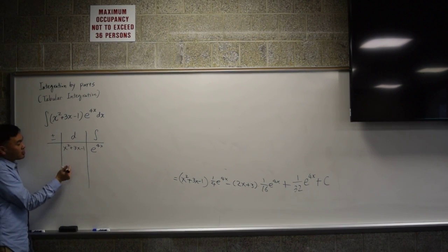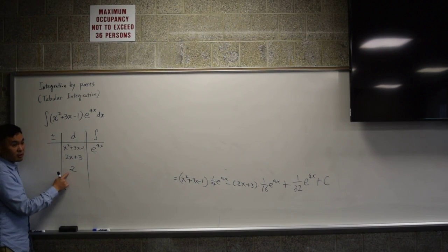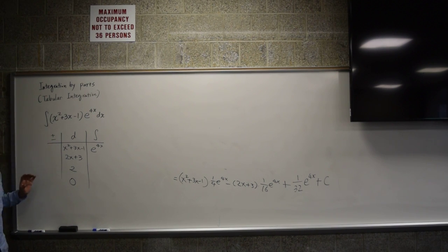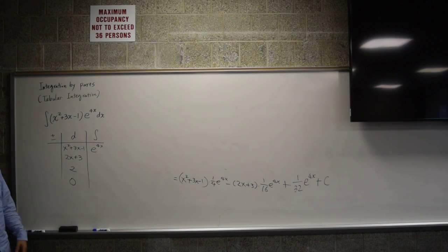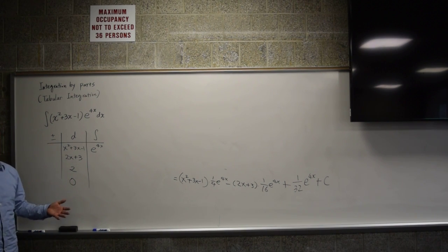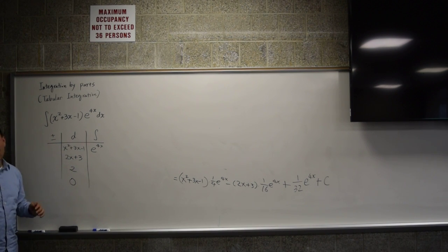The function in the derivative column gets differentiated all the way down; the function in the integral column gets integrated all the way down. Differentiating x squared plus 3x minus 1 gives 2x plus 3, then 2, then 0. We stop when we hit 0. On the integral side: the integral of e to the 4x is one-fourth e to the 4x; integrating again gives one-sixteenth e to the 4x; integrating once more gives one-sixty-fourth e to the 4x.